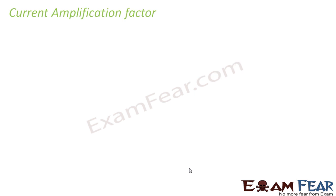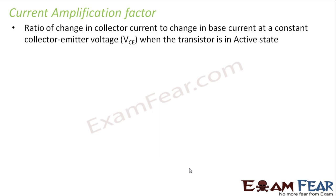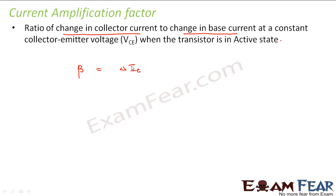The third parameter is the current amplification factor. When we talk about amplification, we compare output current with input current. It is defined as the ratio of change in collector current to the change in base current at a constant collector-emitter voltage when the transistor is in the active state. We denote this amplification factor by beta: beta equals delta I_C divided by delta I_B at constant V_CE.